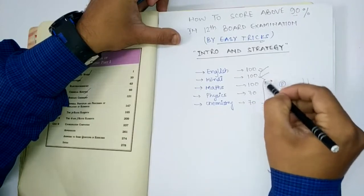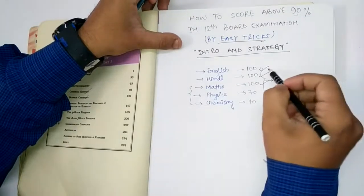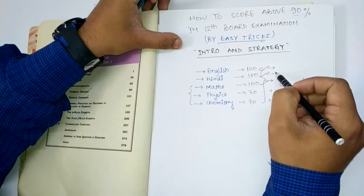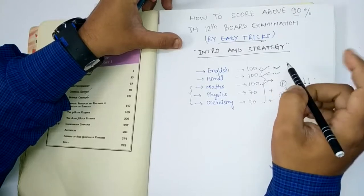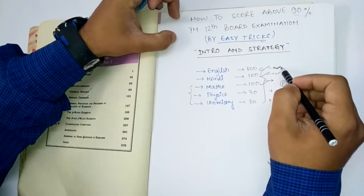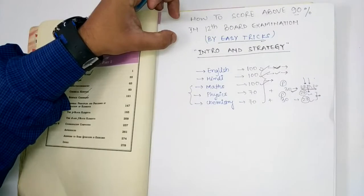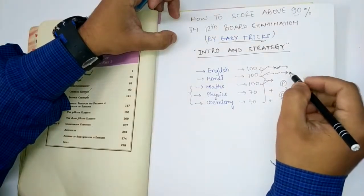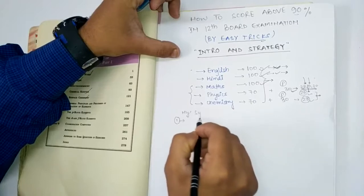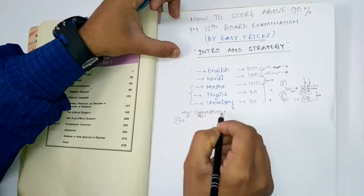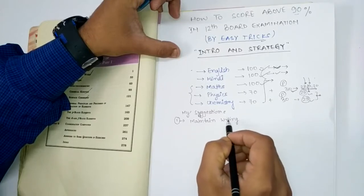In theory, English, Hindi, and Maths each have 100 marks. Generally people pay attention only on these three subjects and think they can easily pass in English and Hindi, but these subjects are going to fetch more marks for the board. According to me, if you are preparing for the board, firstly focus on English and Hindi. Hindi is the most easy — give just half an hour per day. The very first trick: maintain your writing.